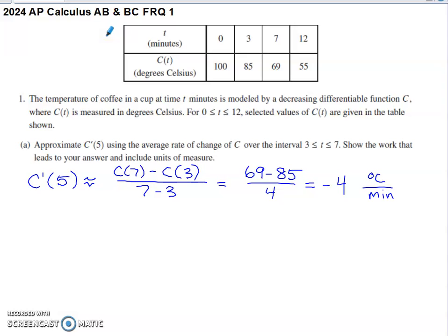Setup for this one gives us this table of values. We've got time being measured in minutes, C of T being measured in degrees Celsius. The temperature of coffee in a cup at time T minutes is modeled by a decreasing differentiable function C. We've got values of that function C on the interval 0 to 12 given in the table shown.